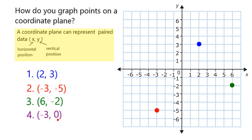For my fourth and final point, I'm going to go negative 3 in the horizontal direction. Because my y value is 0, I do not go either up or down.